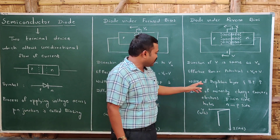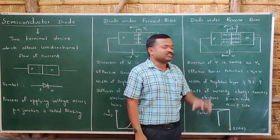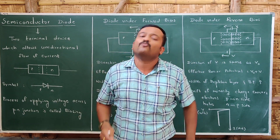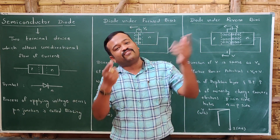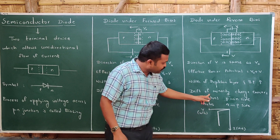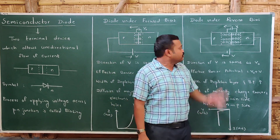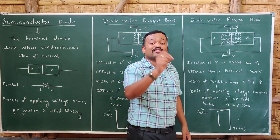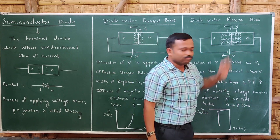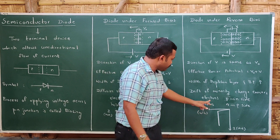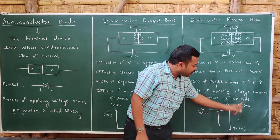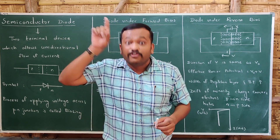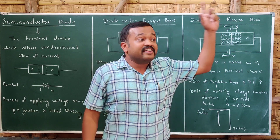What happens in reverse bias? The width of the depletion region and barrier potential increase. As barrier potential increases, the electric field increases. When the electric field increases, drift of charges takes place — specifically, drift of minority charge carriers. In the P side, the minority charge carriers are electrons, so electrons move from P to N side and holes move from N to P side. So in forward bias, diffusion of majority charge carriers takes place; in reverse bias, drift of minority charge carriers takes place.